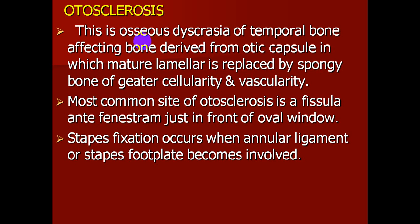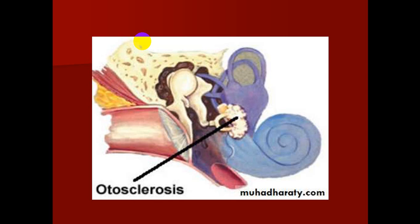The most common site of otosclerosis is the fistula ante-fenestrum, which lies just in front of the oval window. Stapes fixation occurs when the annular ligament or stapes footplate becomes involved by the otosclerotic process.